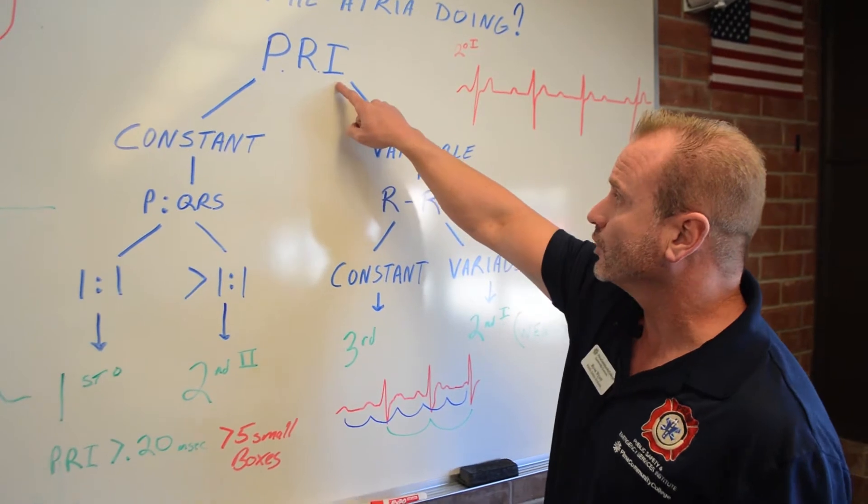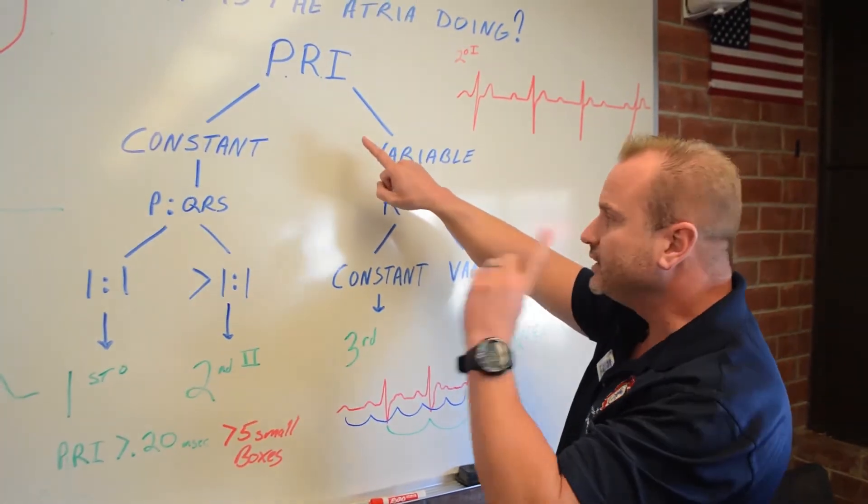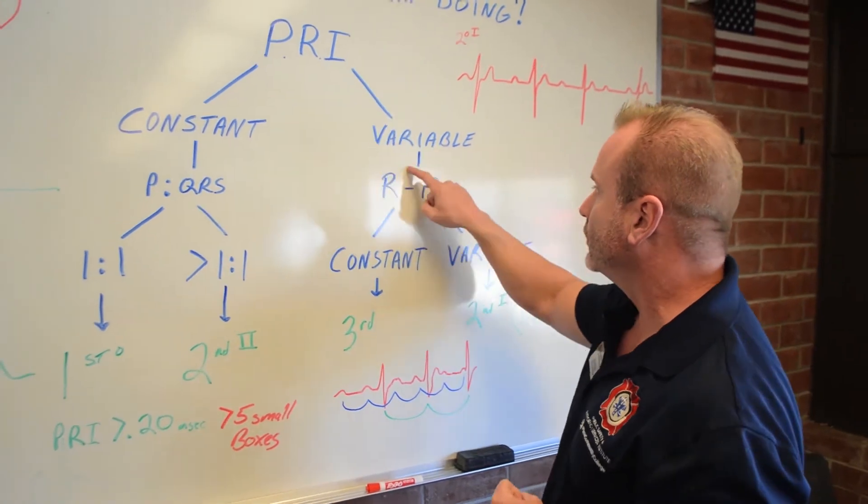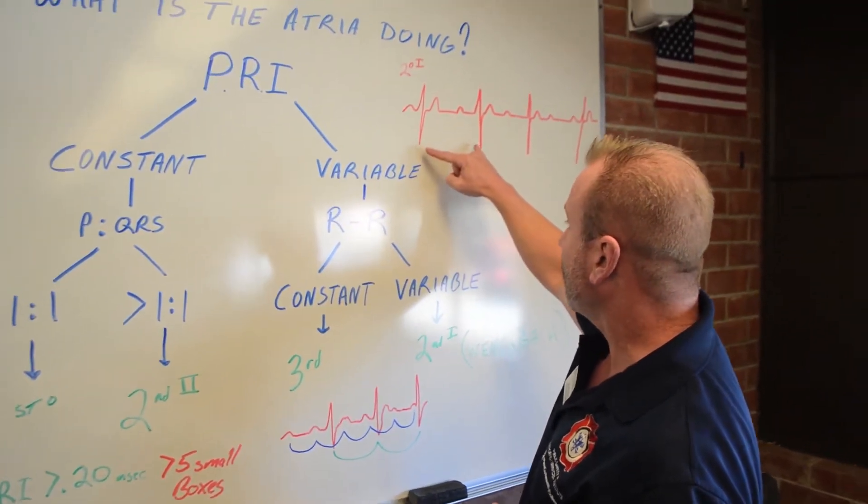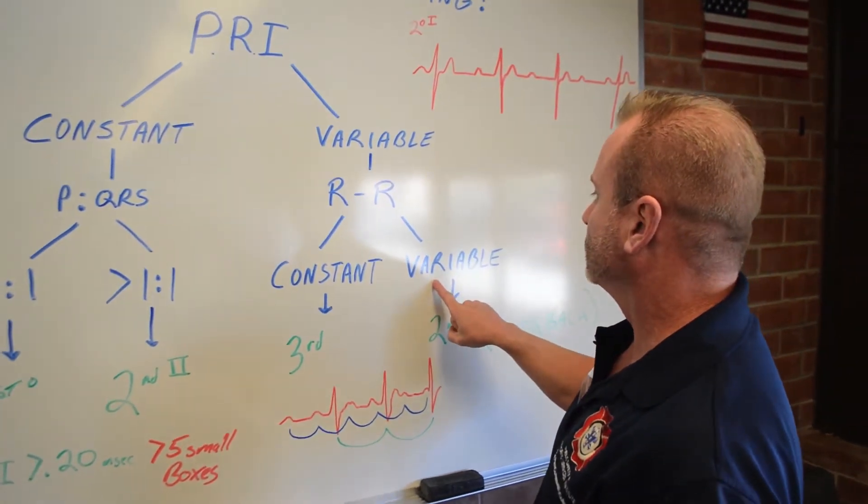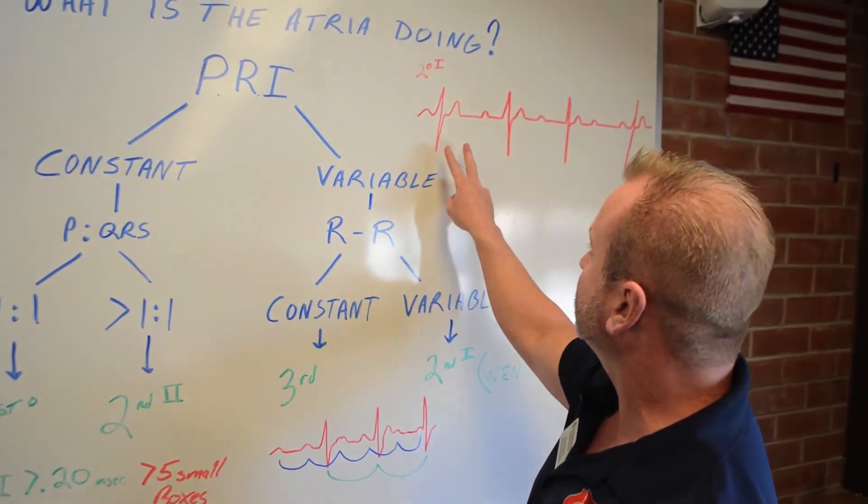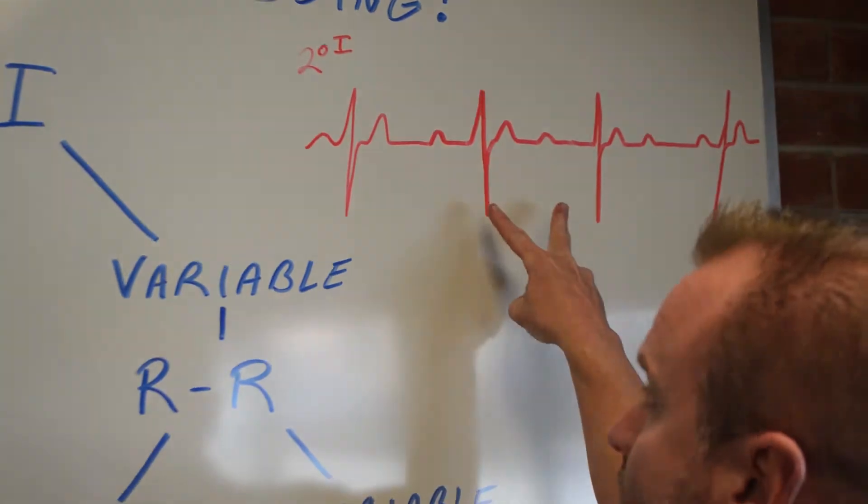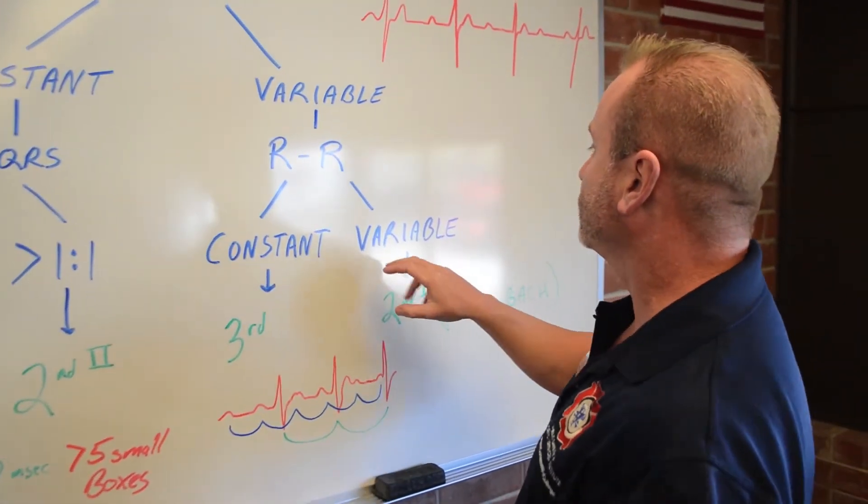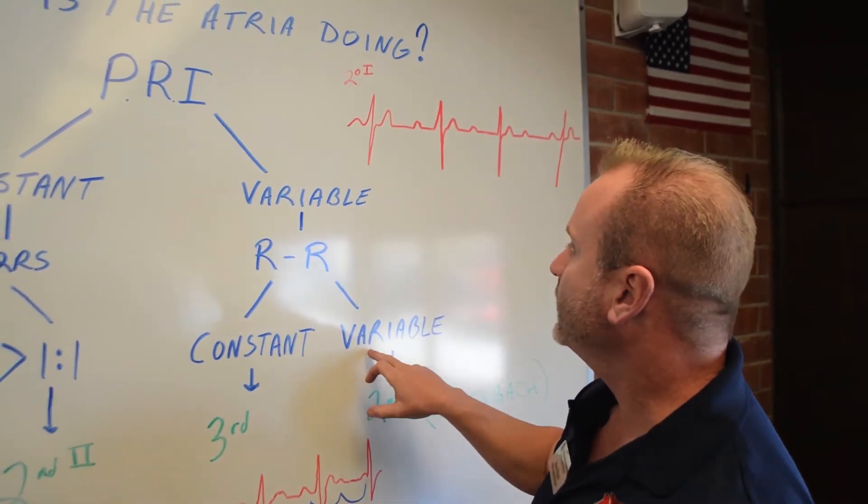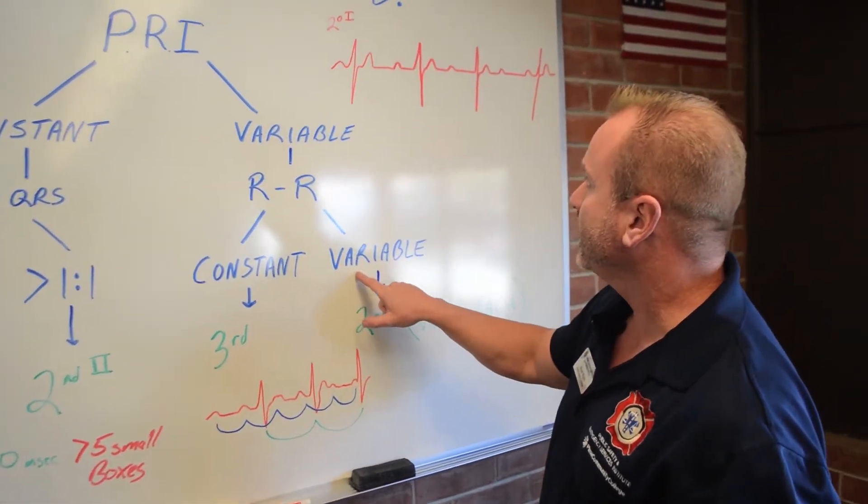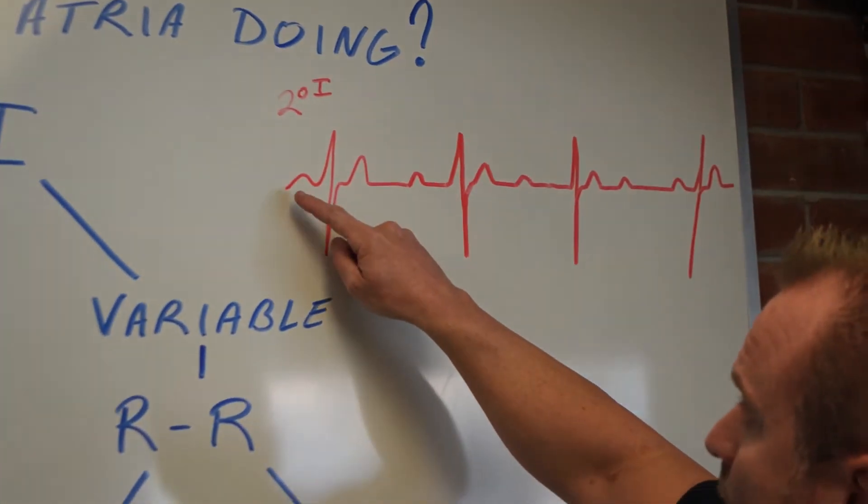So if my PR interval is not constant, so I know at least it's not a first degree. If I have a variable PR interval, I can just look at my RR interval. Is that variable or is it constant? If I took my fingers, I had calipers and it marched out perfectly. Well, I know it's probably a third, which we'll talk about later, but mine is variable in this situation. That means here's our second degree type one, our Wenckebach.